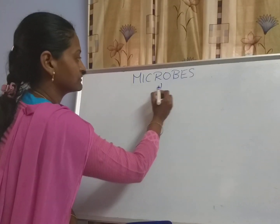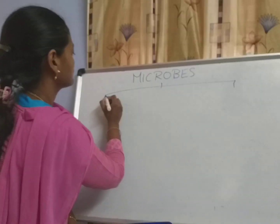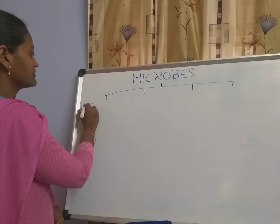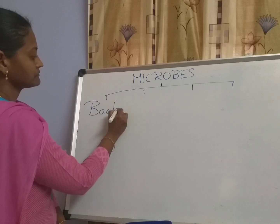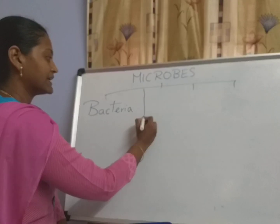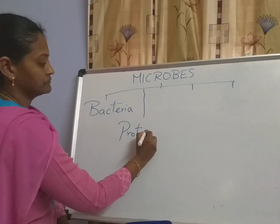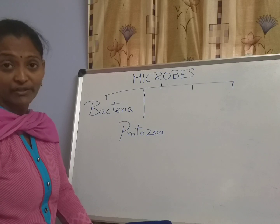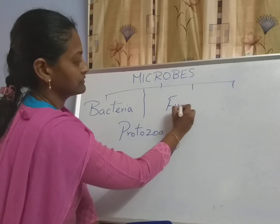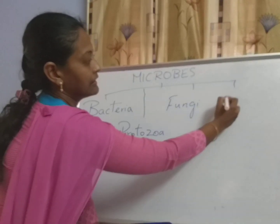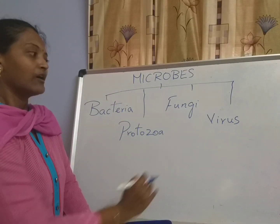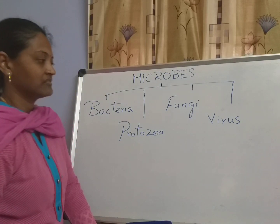Now coming to the types of microbes. There are mainly four types of microbes. The first one is bacteria, the second one is protozoa, the third one is fungi, and the last one is virus. Our coronavirus comes under this category — virus.